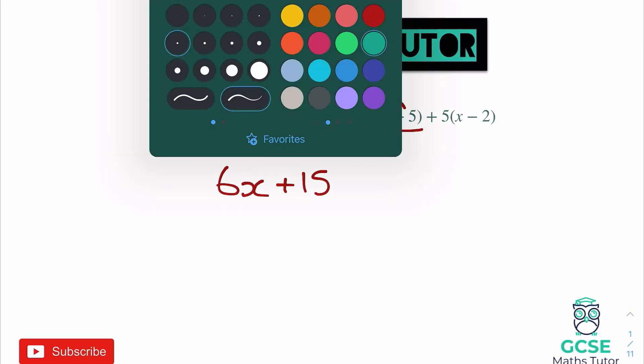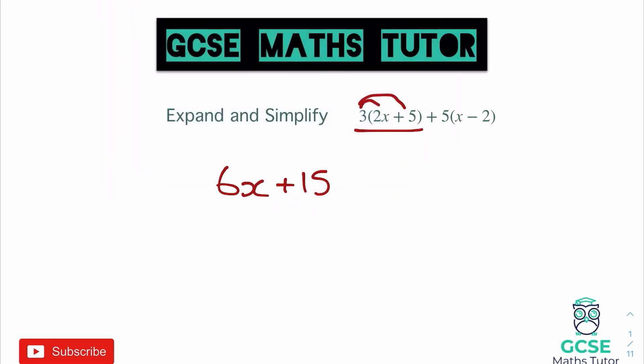Then we move on to the next bracket. We're going to expand this one over here and we are going to be adding what's in there to the bracket before. So we're going to do five times x, so we're going to add five x. That's going to be plus 5x, and then we're going to do five times the minus two and five times minus two will become minus 10.